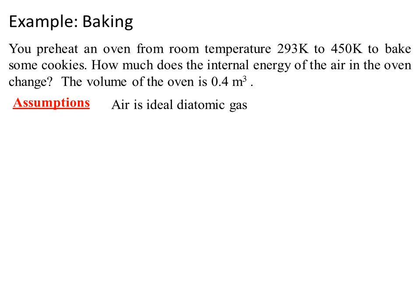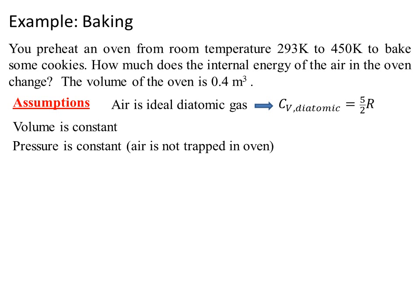Let's say the assumptions are that the air is an ideal diatomic gas. That says C_v diatomic is equal to 5/2 R. The volume is constant and the pressure is constant because air is not trapped in the oven. It can leak in or out. The number of moles is not constant because the air can leak in or out.